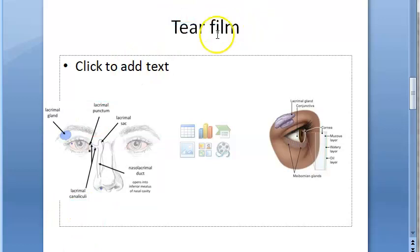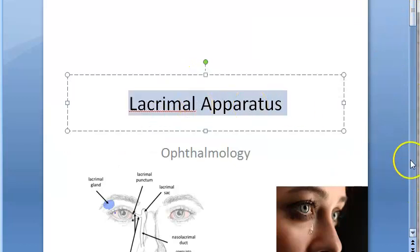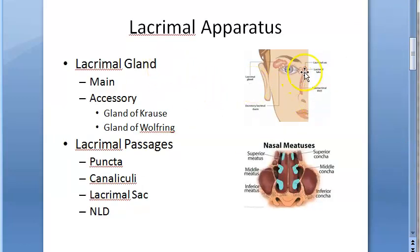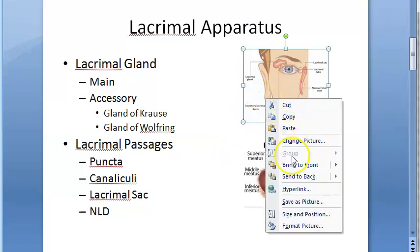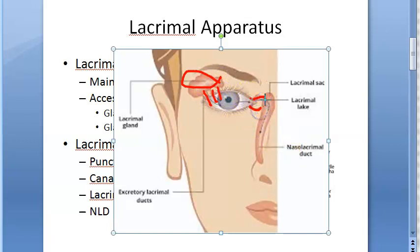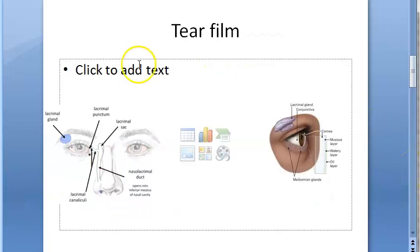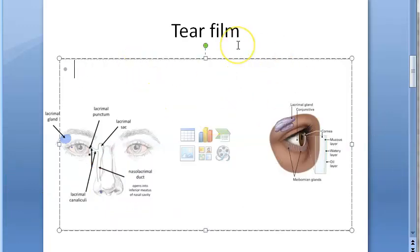Hello, in this video we want to look at tear film. In the last video we looked at the lacrimal apparatus - the lacrimal gland and the passages for lacrimal secretion: the puncta, the canaliculi, the lacrimal sac, and the nasolacrimal duct with the valve of Hasner. We saw the blood supply and nerve supply. Now let us move on to tear film.